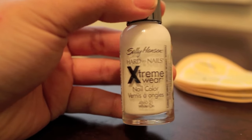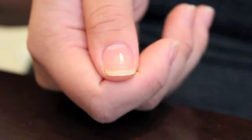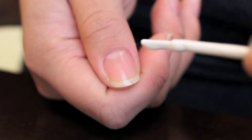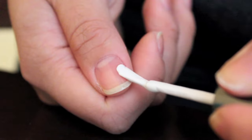Alright, so what I'm going to do is take my first polish, which is in white, and I'm going to paint about three fourths of my nail white, leaving the top empty.